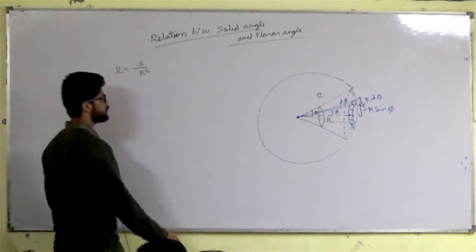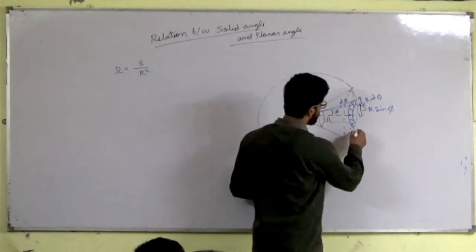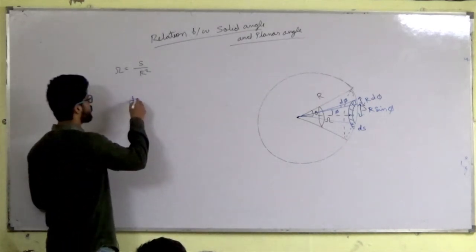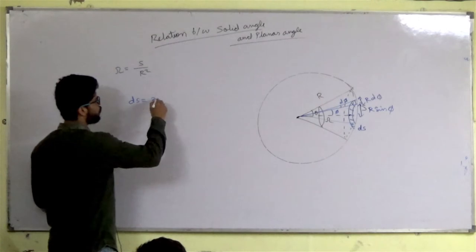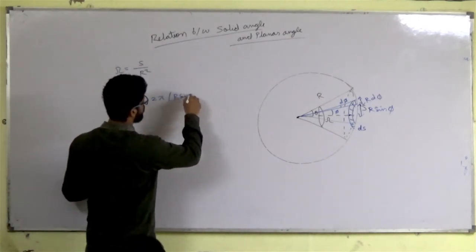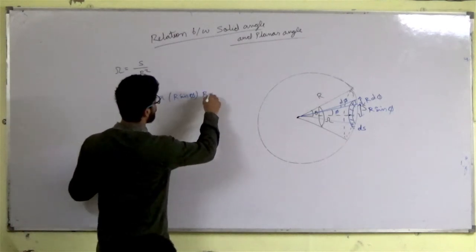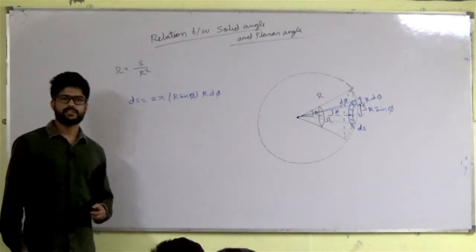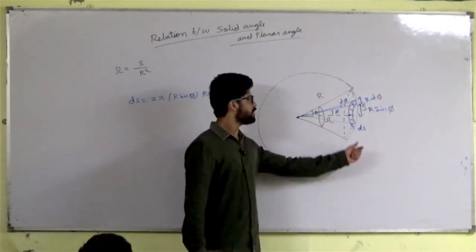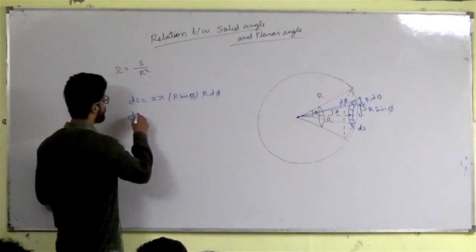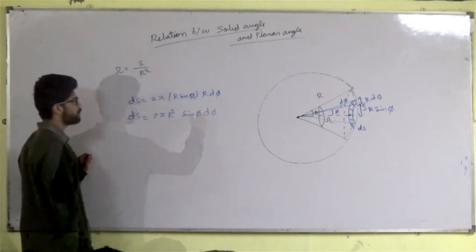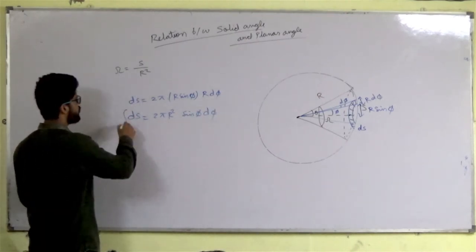So this little ring element dS — what will you get? 2π times R sin(phi) times the width R dphi. So this is the circumference times the width. So the area element dS = 2πR² sin(phi) dphi.